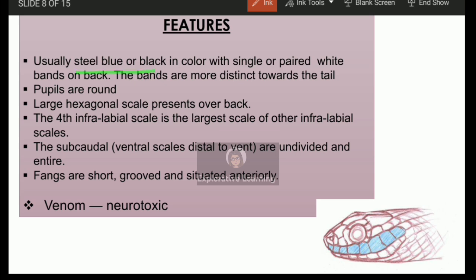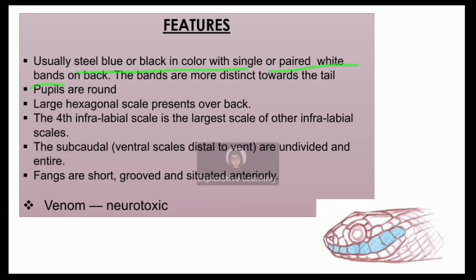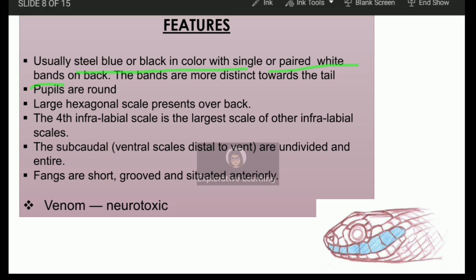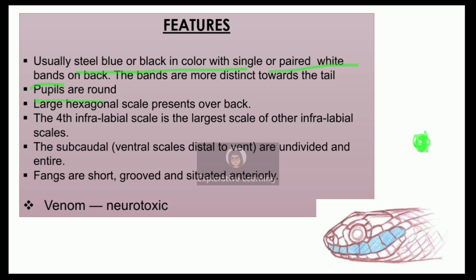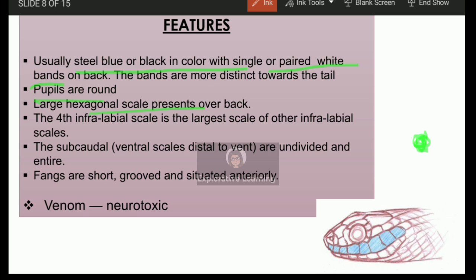Here are some of the common features of banded krait noted so far. It is steel blue or black in color. There are single paired white bands present on the back of the snake — have a look at the image of the banded krait. Its pupils are round — similar to common cobra, which also had round black pupils. Some large hexagonal scales are present on the back of the snake. Hexa means six, so hexagonal scales are commonly found on the back side of the body of the banded krait.